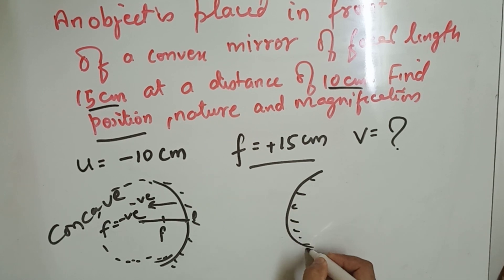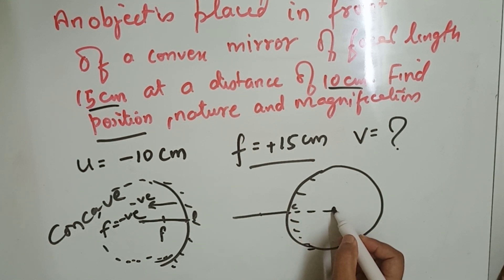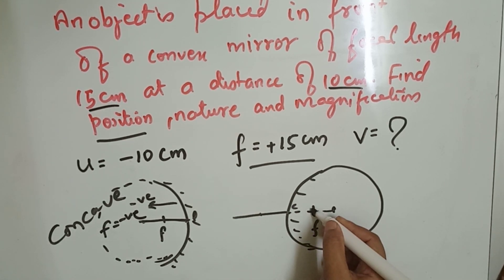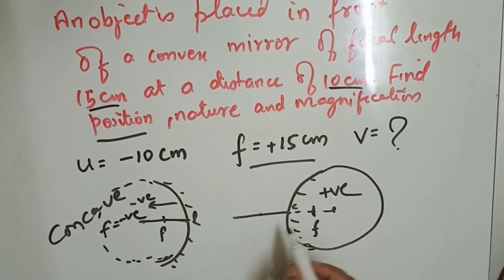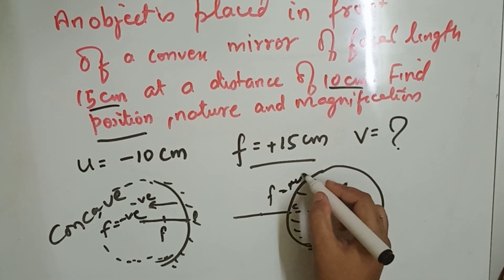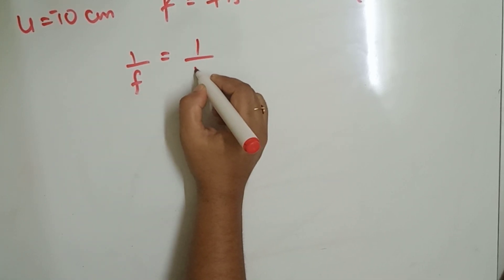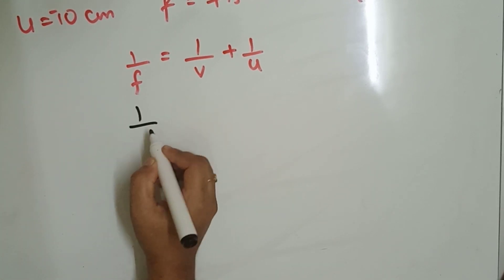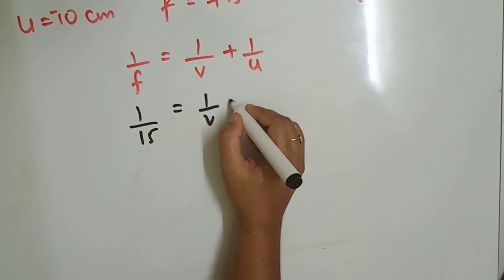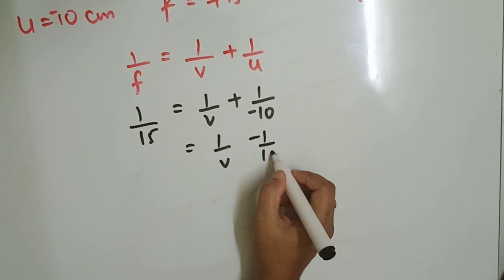To clarify the sign of focal length: for a concave mirror, if the object is on the left, completing the sphere shows the radius and therefore the focal point lie on the left, so focal length of a concave mirror is always negative. For a convex mirror, completing the sphere shows the radius and focus lie to the right, so focal length of a convex mirror is always positive.